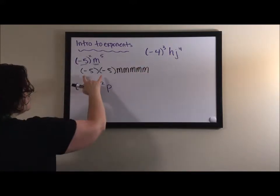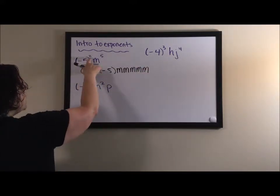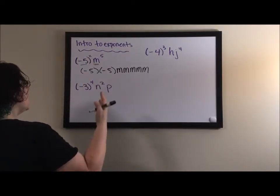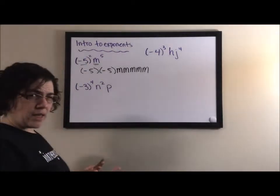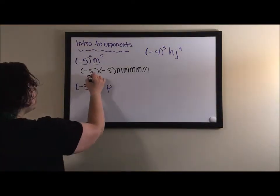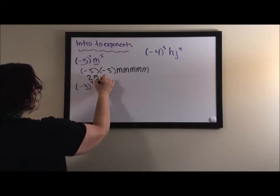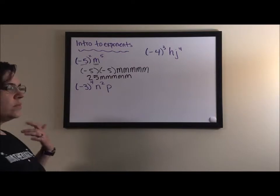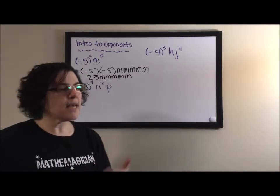Okay, so a lot of times when you see a negative five squared, the answer becomes negative because you forget the fact that the negative is also being squared. Negative five times negative five is actually a positive twenty-five in the five m's. Now I said a second ago we're going to write them without any seen exponents.